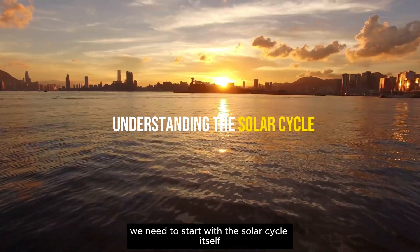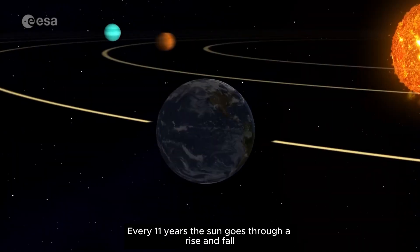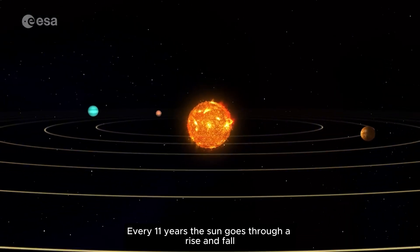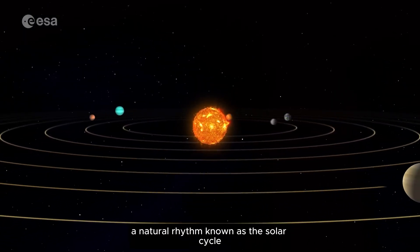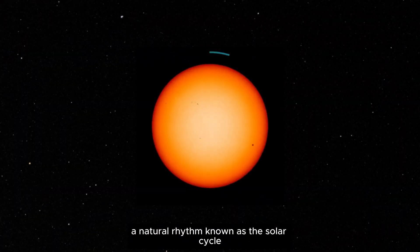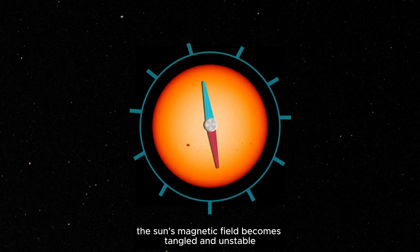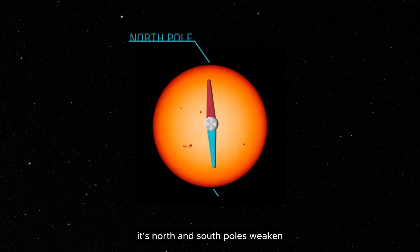To understand what's happening on the sun, we need to start with the solar cycle itself. Every 11 years, the sun goes through a rise and fall in magnetic activity, a natural rhythm known as the solar cycle. As the cycle builds, the sun's magnetic field becomes tangled and unstable. Its north and south poles weaken,